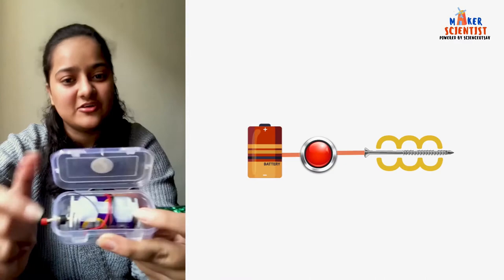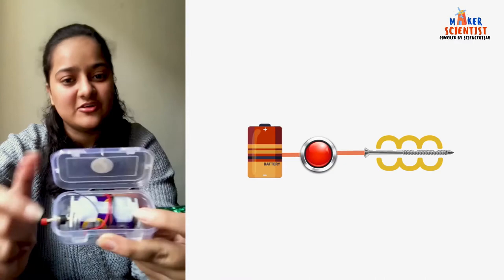So therefore, when current passes through the wire, it creates a magnetic field around it and starts acting as a magnet, which we call an electromagnet.